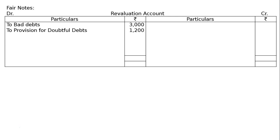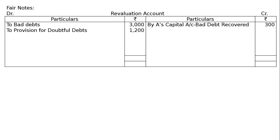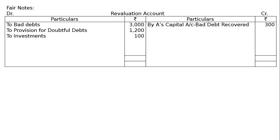Then adjustment C — A recovered ₹300 and didn't give it to the firm, so the firm will receive ₹300 from A. Write on credit side: by A's capital account ₹300. This is the final entry: A's capital account debited ₹300. Then adjustment D — B took the investment and paid cash; ₹100 loss occurred. Actual value of investment ₹5,000, B paid ₹4,900, so revaluation account debited ₹100. This loss is put on the debit side of revaluation.